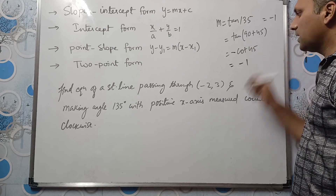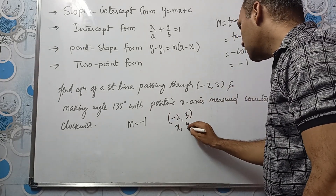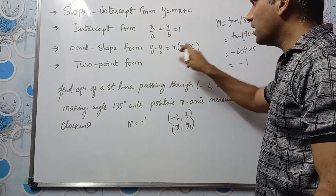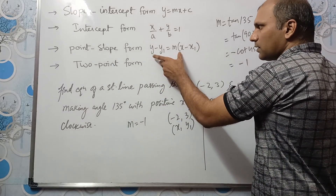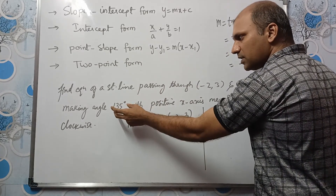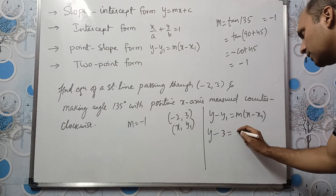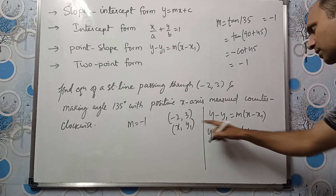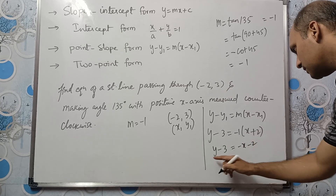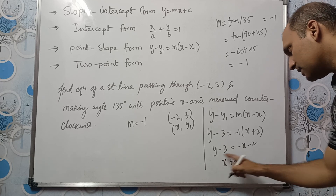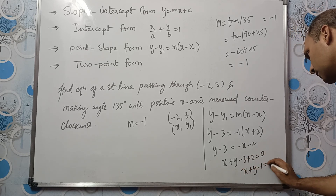So m = -1, x1 = -2, y1 = 3. Substituting: y - 3 = -1·(x - (-2)) = -(x + 2). This gives y - 3 = -x - 2, so x + y - 3 + 2 = 0, which is x + y - 1 = 0.